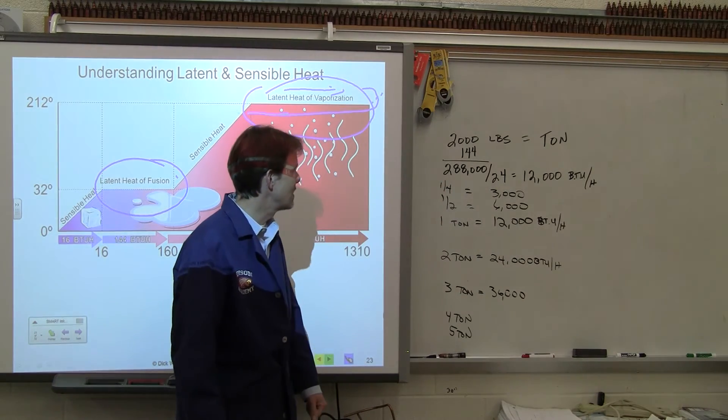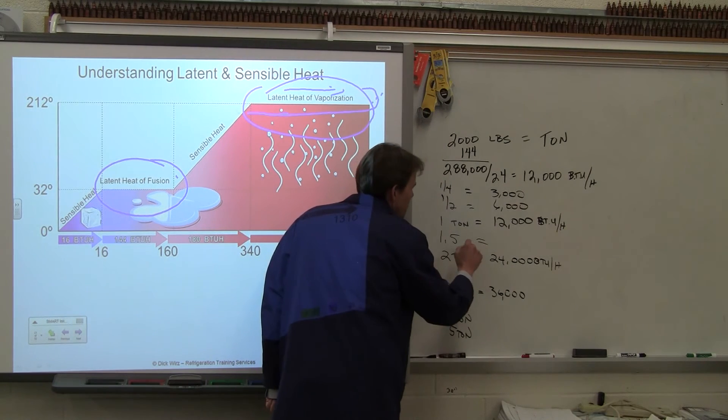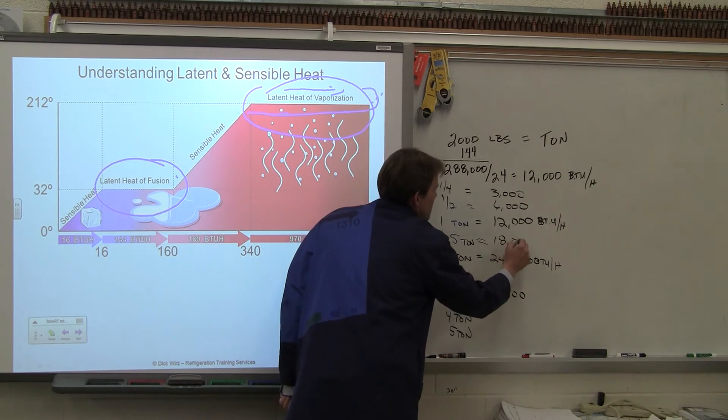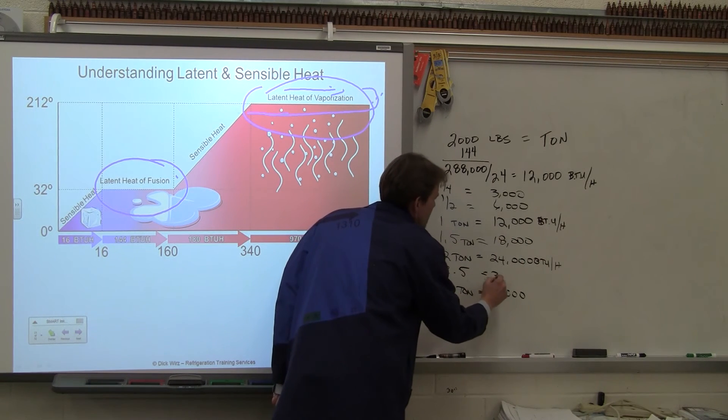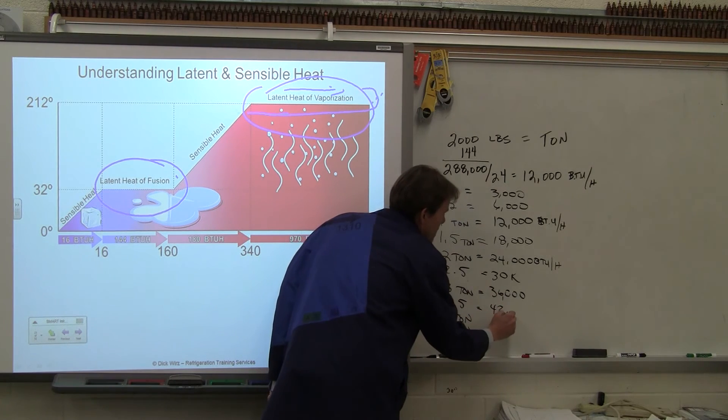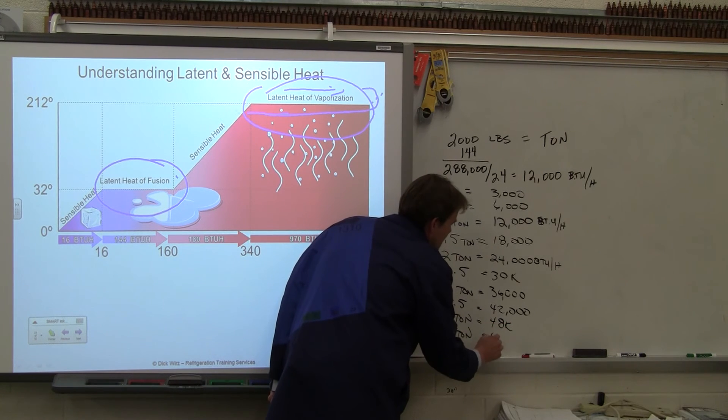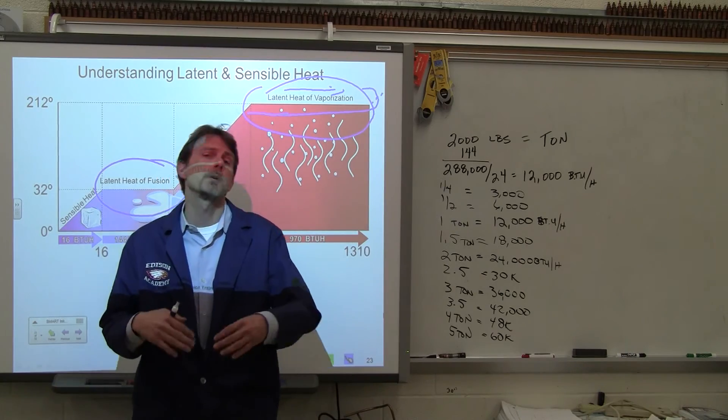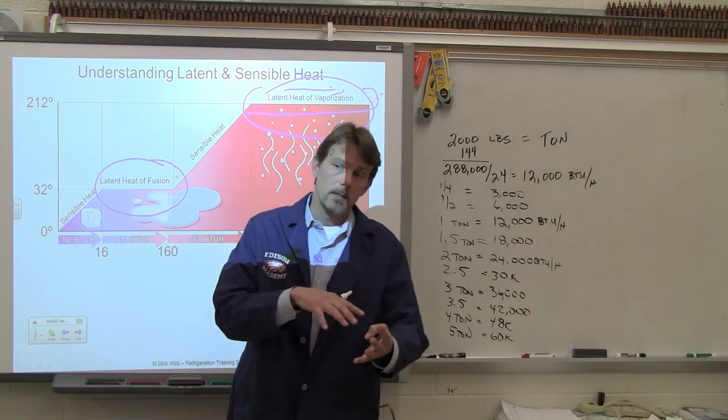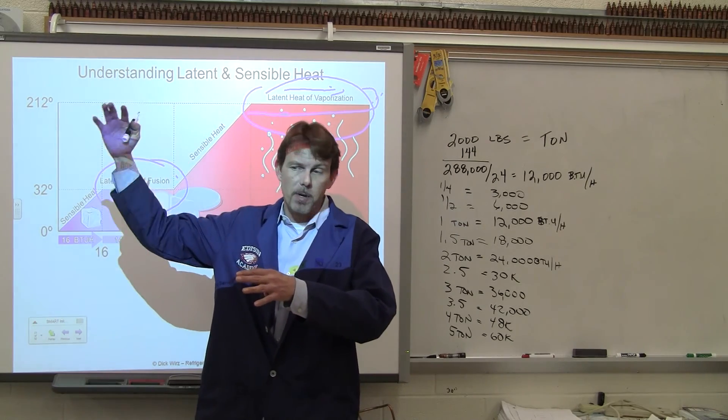So there's our 3.4 BTUs worth of heat. We can start working out numbers a little differently when these sizes get a little small, but normally we got like a ton and a half. So if it's 12,000, what's a ton and a half going to be? 18,000. And then two and a half is 30,000. And then three and a half would be 42,000. And we already said that the four ton is 48 and the five ton is 60. And then usually from there we start going up into tons by two and a half, where it'll be 7.5, 10, 12.5, 15, 20, 25. Now we start going up by five tons, 50, 100, 125.